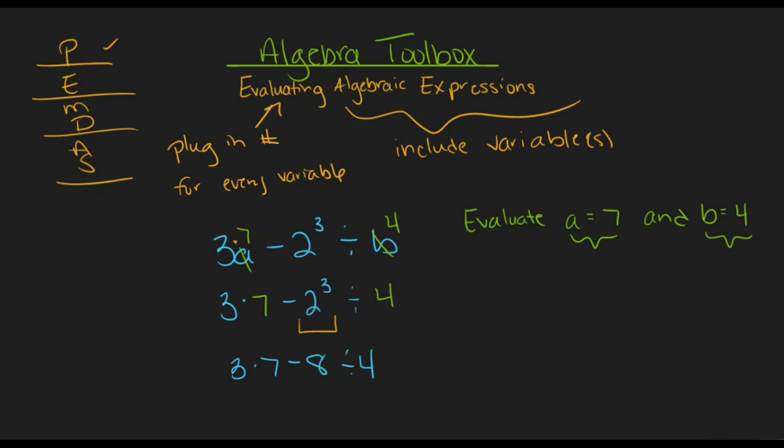Up next, we're done with our exponents, so we can move on to multiplication and division, and we'll handle whichever of these operations we see first as we move to the left. So the first thing I see is multiplication between 3 and 7. That comes out to be 21, so we'll have 21 minus 8, divided by 4.